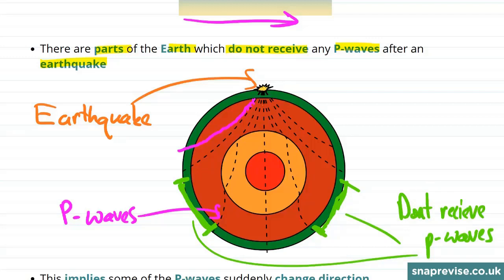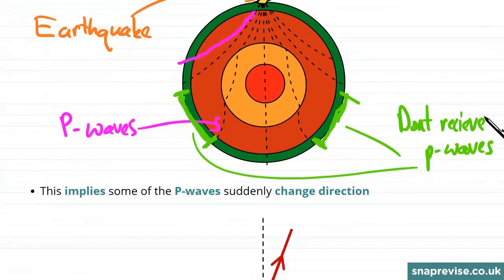Of course we can't see these paths of these P-waves through the Earth. All we can see is that there is a certain part of the Earth where no P-waves are received. And what this implies to us is that the P-waves must suddenly change direction.